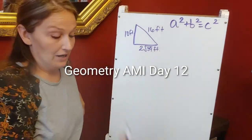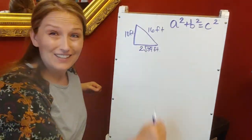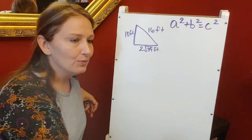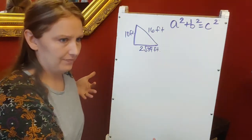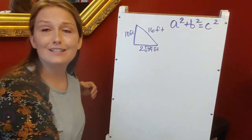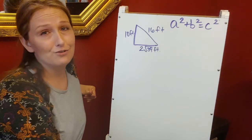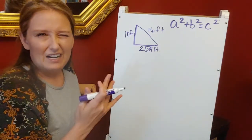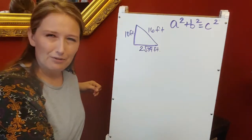Alright geometry, we're starting Day 12. On your AMI for Day 12, you're dealing with triangles. The first part says you have to state whether it's an acute, obtuse, or right triangle. When we think back to right triangles, we always think of Pythagorean theorem.